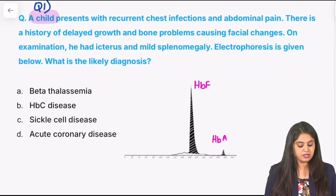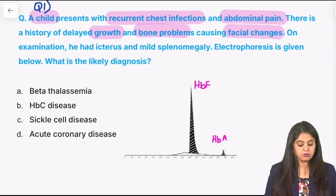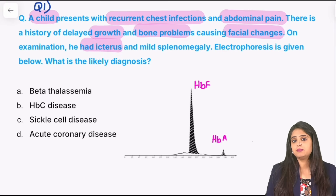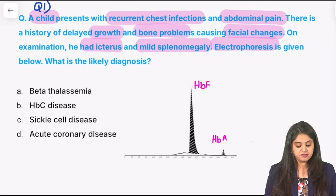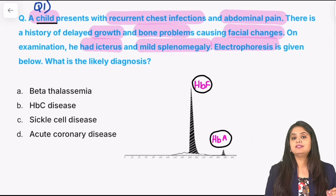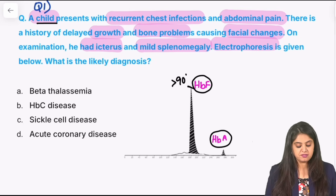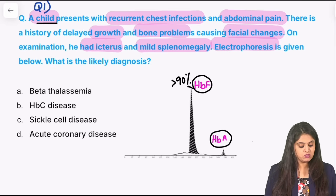Here you have a child who has come with recurrent chest infections and abdominal pain. There is a history of delayed growth and bone problems causing facial changes. There is also liver involvement — probably icterus or hemolytic anemia causing jaundice — and mild splenomegaly. On electrophoresis, there is a spike of fetal hemoglobin and very little adult hemoglobin. More than 90 percent fetal hemoglobin in a child points to thalassemia major, so we select beta thalassemia major.